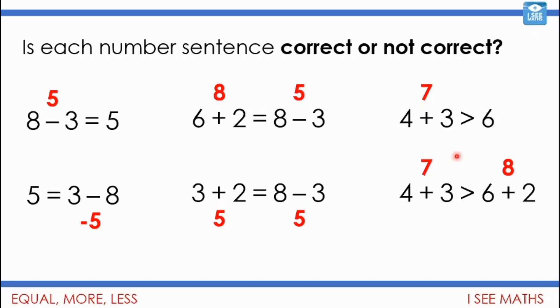And what about 4 plus 3 and 6 plus 2? Well 4 plus 3 is 7, 6 plus 2 is 8, so no this is the wrong way around because actually this side is the smaller side. 6 plus 2 is more.